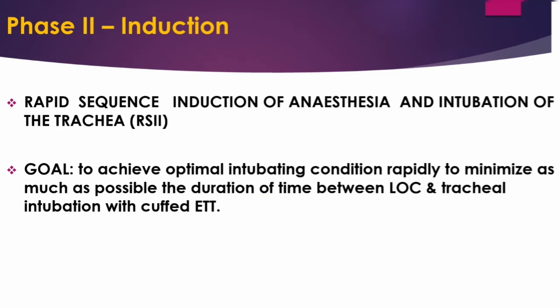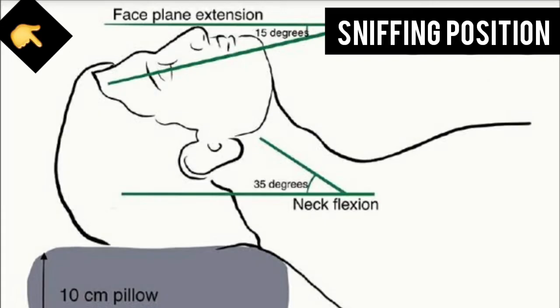RSI — rapid sequence induction and intubation — is the method of choice in this patient. The goal is to achieve optimal intubating conditions rapidly, minimizing as much as possible the duration of time between loss of consciousness and tracheal intubation with a cuffed endotracheal tube. The patient must be on a tipping trolley or table, preferably with an adjustable headpiece, so that the degree of neck extension or flexion may be altered quickly. The patient should be in the classic sniffing position with the neck flexed on the shoulder and the head extended on the neck.